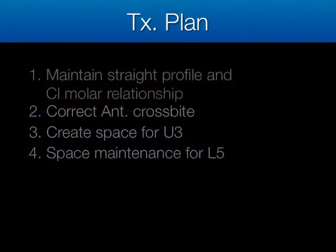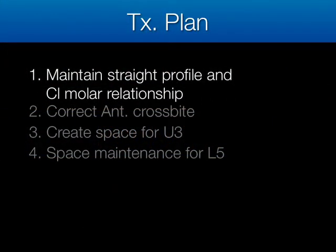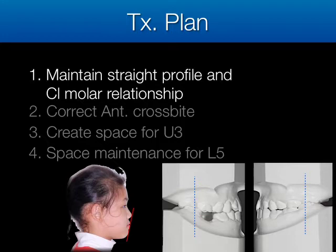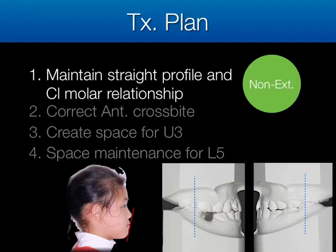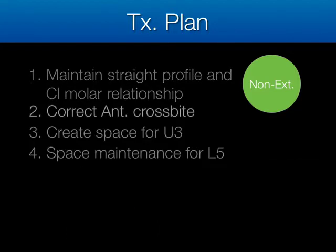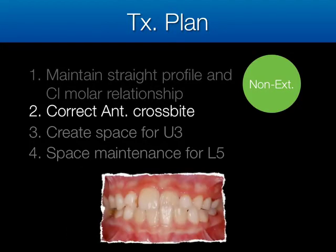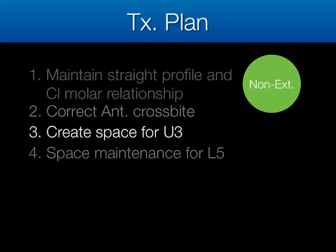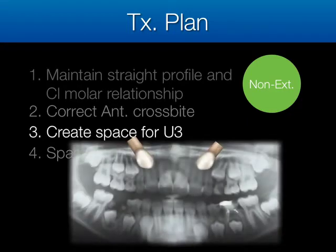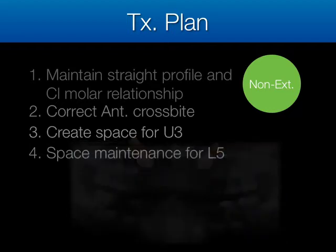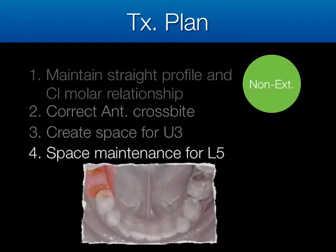Our treatment plans were: first, to maintain her straight profile and her Class I molar relationship, so we do non-extraction; second, correct the anterior crossbite; next, create space for the impacted canines; and last, maintain space for the lower second premolar.